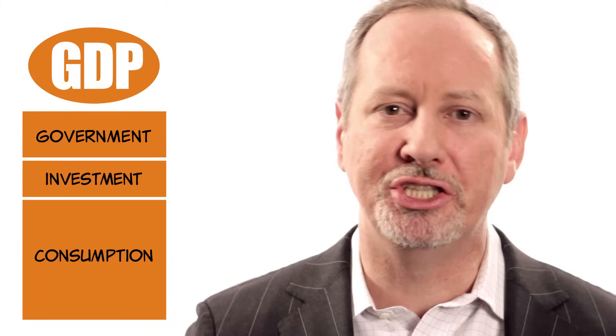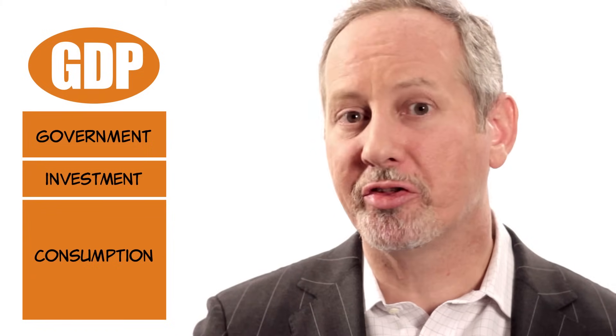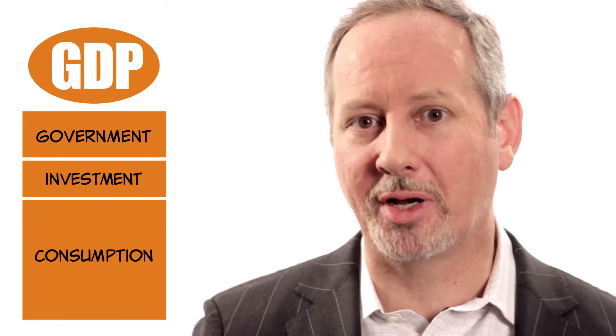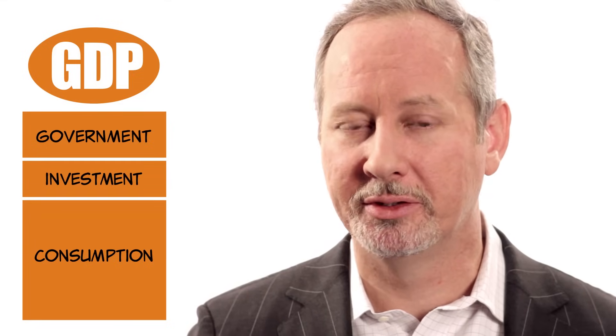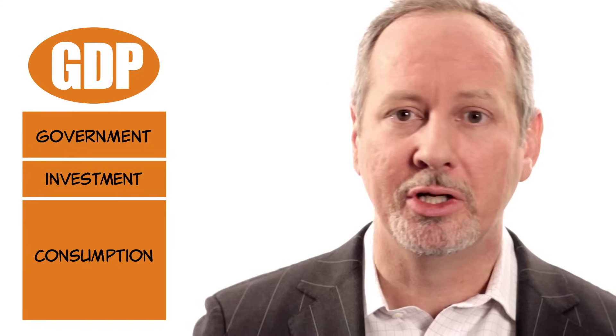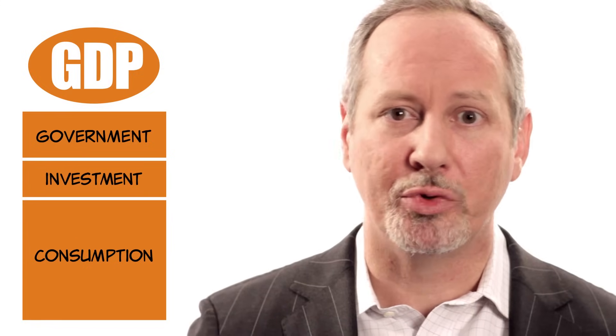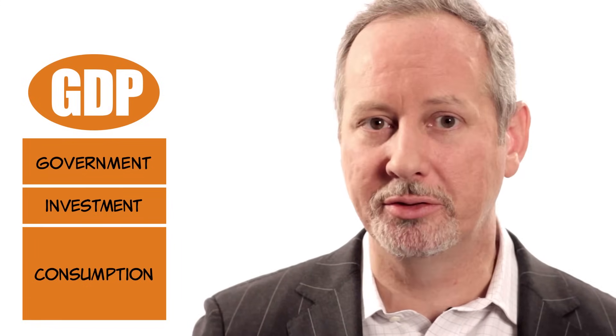So why are we doing all this? Economists find it useful to split GDP this way because the forces that determine consumption, investment, and government purchases are very different. And if GDP falls, we may be interested in knowing whether that was caused by a fall in consumption, or a fall in investment or government purchases. If we want to combat a recession, we also have different tools for increasing consumption, investment, or government purchases.